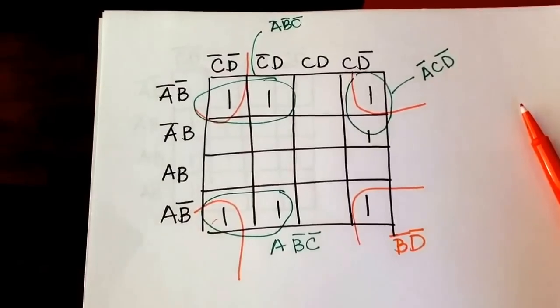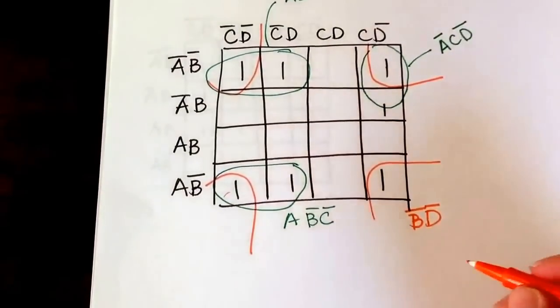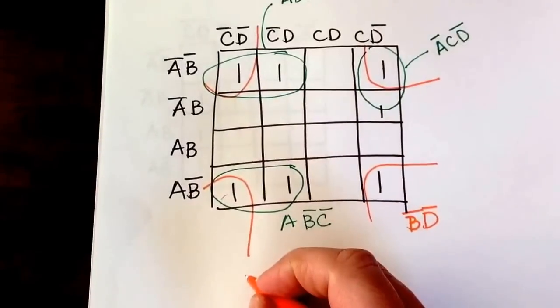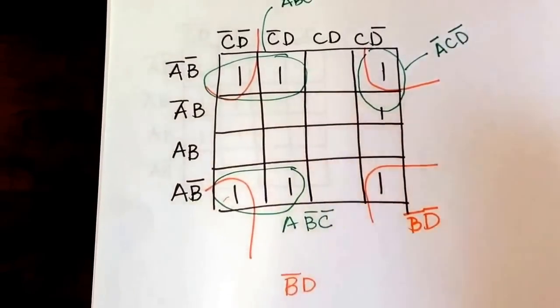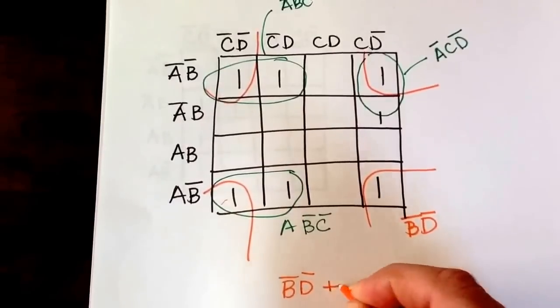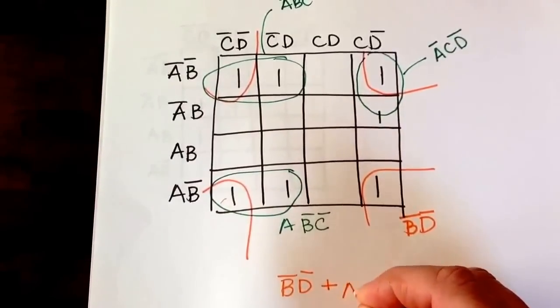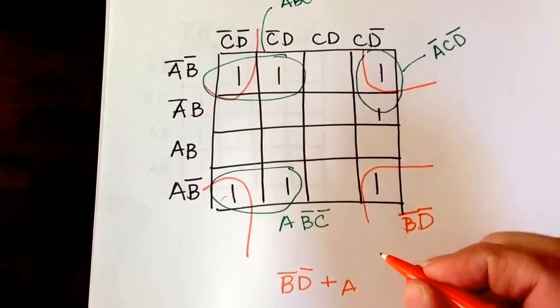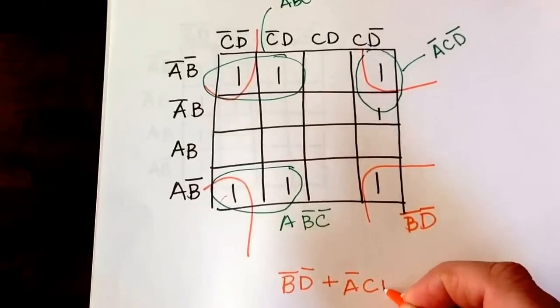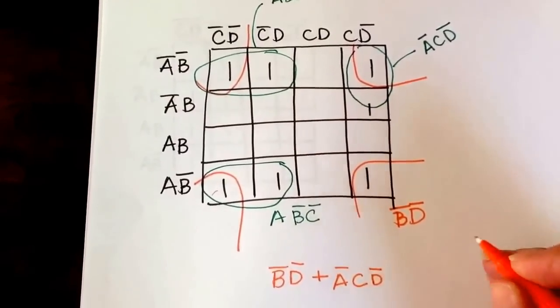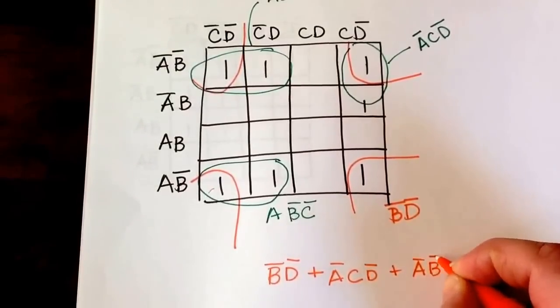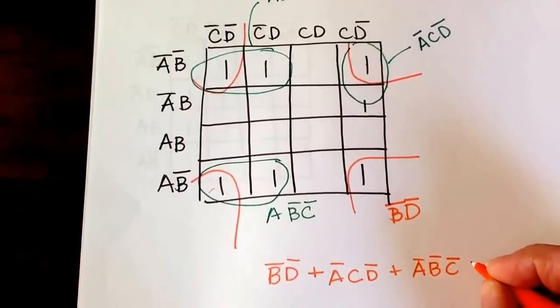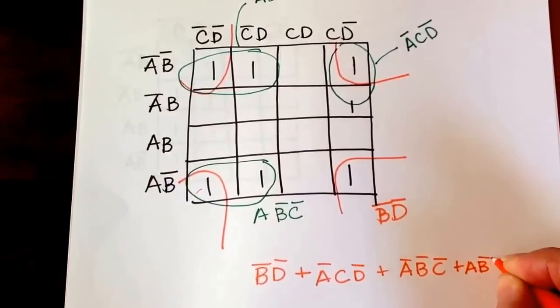So when we look at that, it becomes not B, not D, or not A, C, not D, or not A, not B, not C, or A, not B, not C.